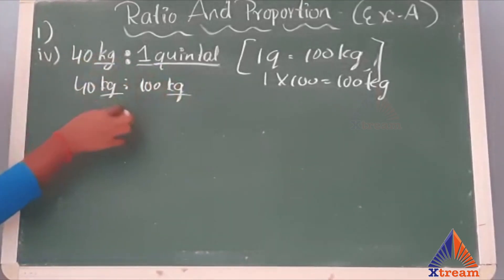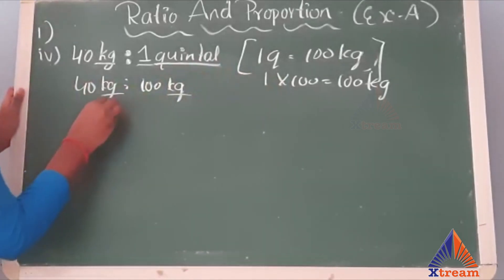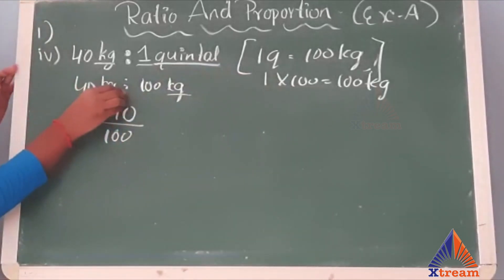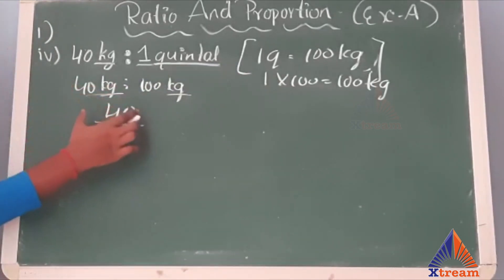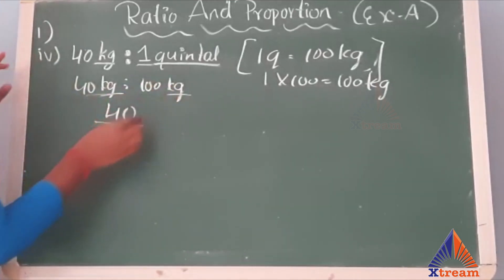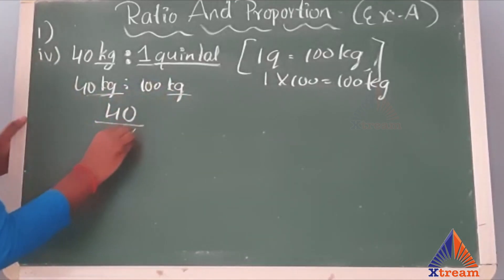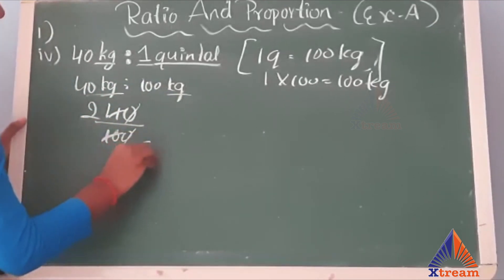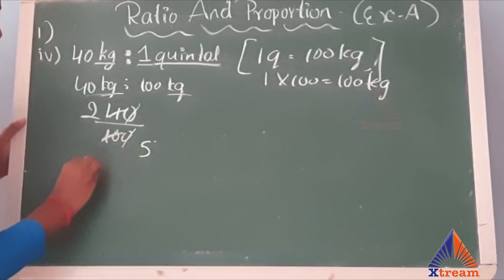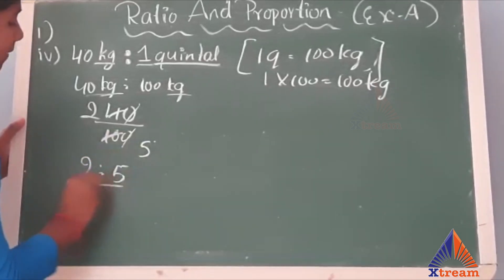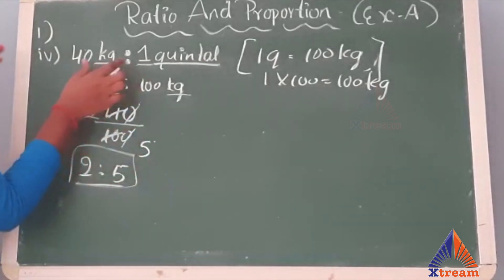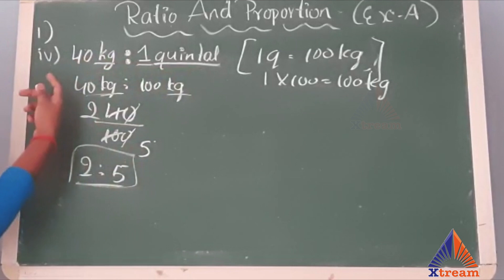Now that both units are the same after conversion, we can solve it. We can easily cancel: that is 40 divided by 100. Make sure you always write the antecedent — the first term — in the numerator, and the consequent — the second term — in the denominator. Cancelling the zeros: 2 fives are 10, so your ratio will be 2 is to 5. This is the simplest form of this ratio.